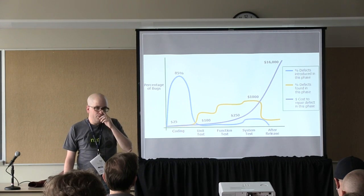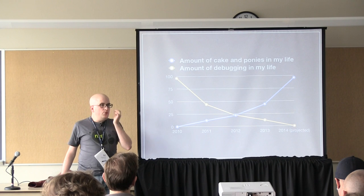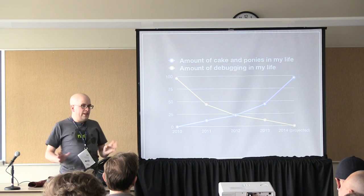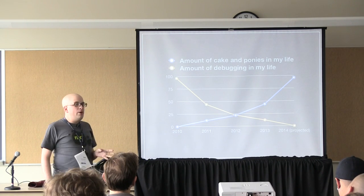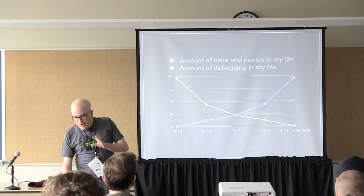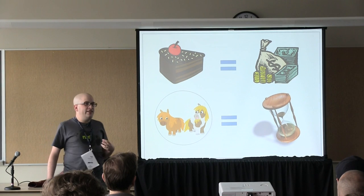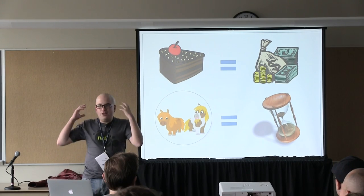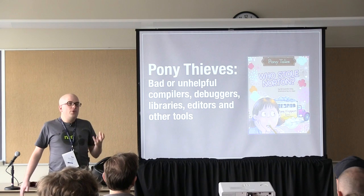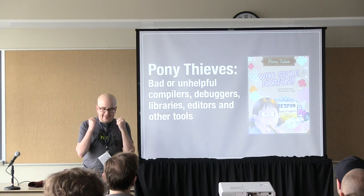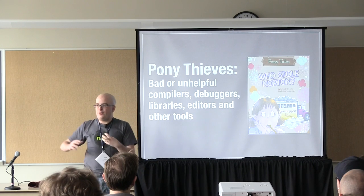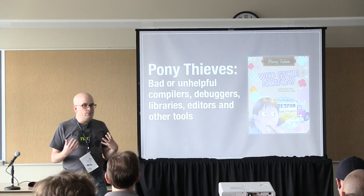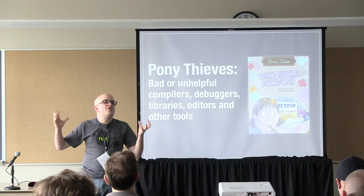Here's a simpler graph explaining the concept: the amount of time I'm not debugging is spent with much happier things — I like cake and ponies. I'm mainly using an analogy: cake as money, ponies as time that could be spent riding ponies. And the trouble is that this time gets taken away by pony thieves — compiler errors that don't explain things, library bugs, stuff that hasn't been thought through in terms of usability. This is my valuable time, and some lazy software designer is taking it away from me.